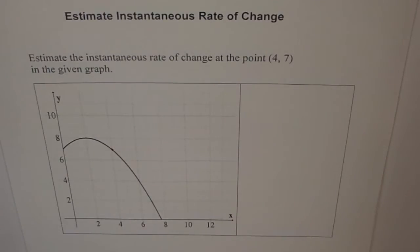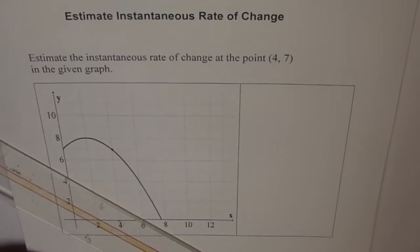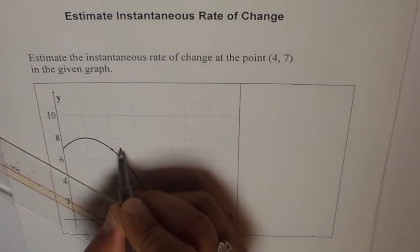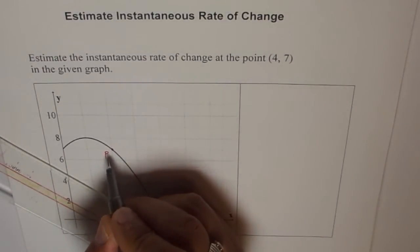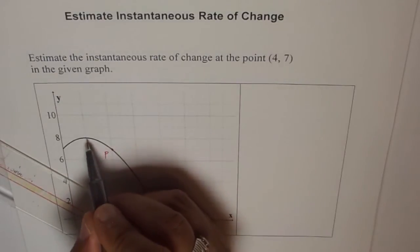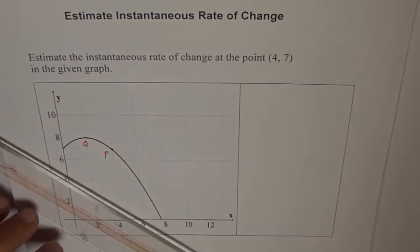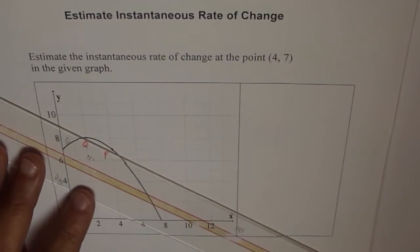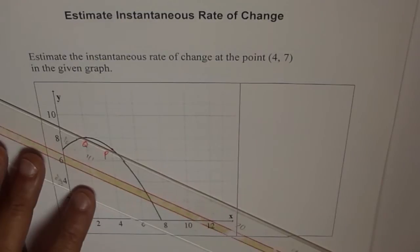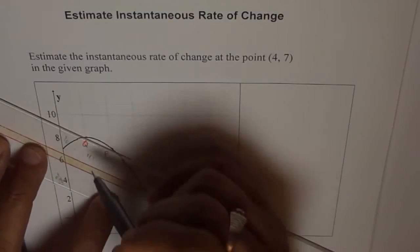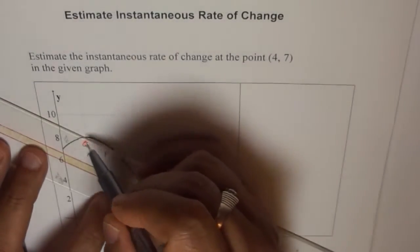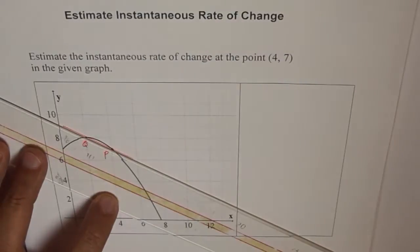Now the question is, how to draw the tangent here? Well, there are many ways to do it. And one of the ways is that, let's say we consider this point as P and then we find a point Q somewhere. Let's say this point Q. So when we join them, we get this secant PQ. That's a secant PQ.